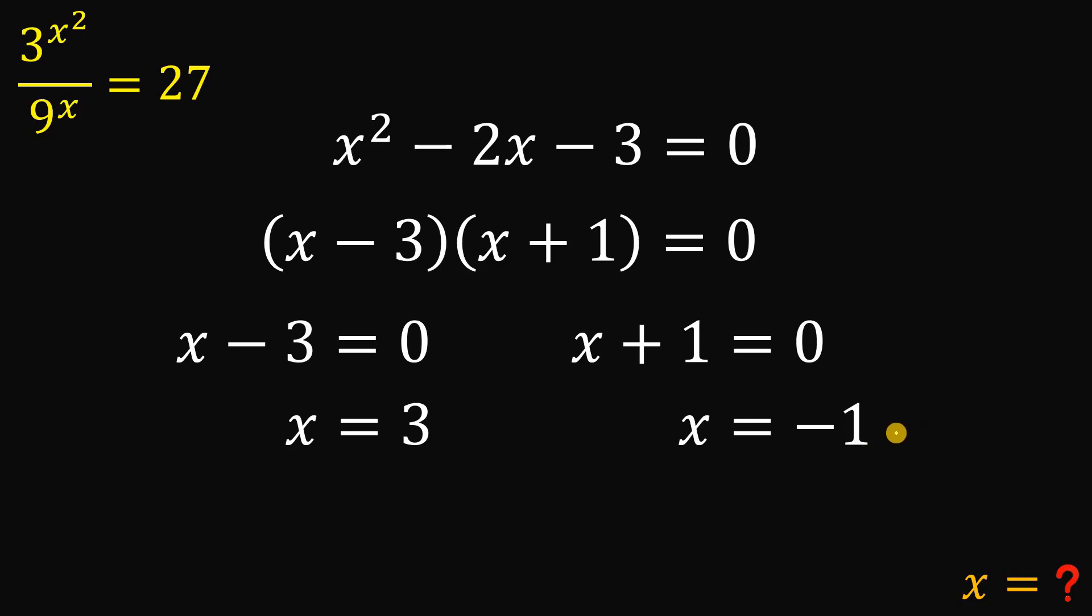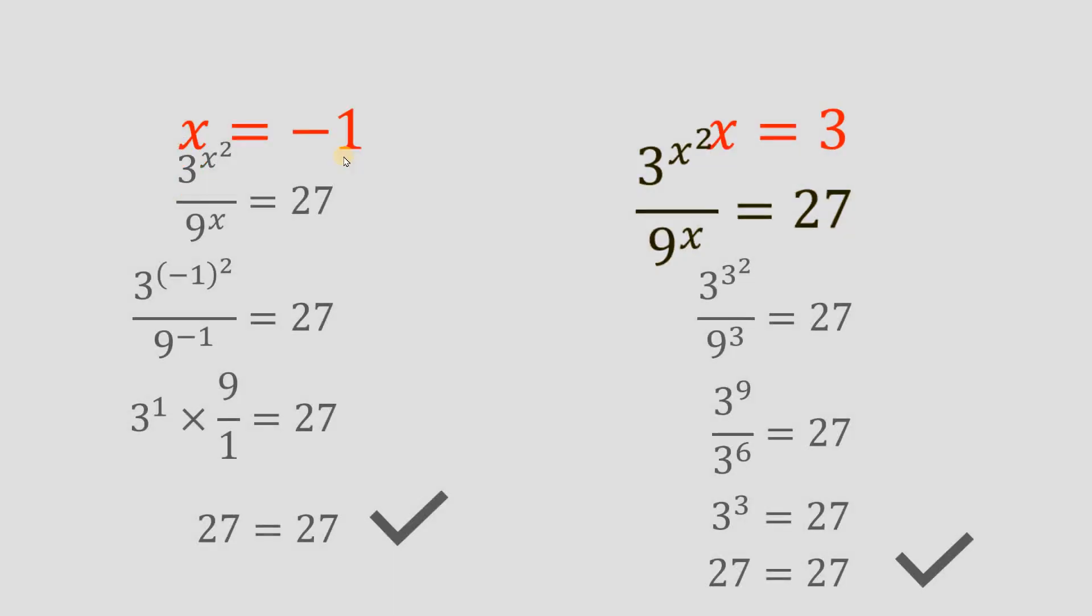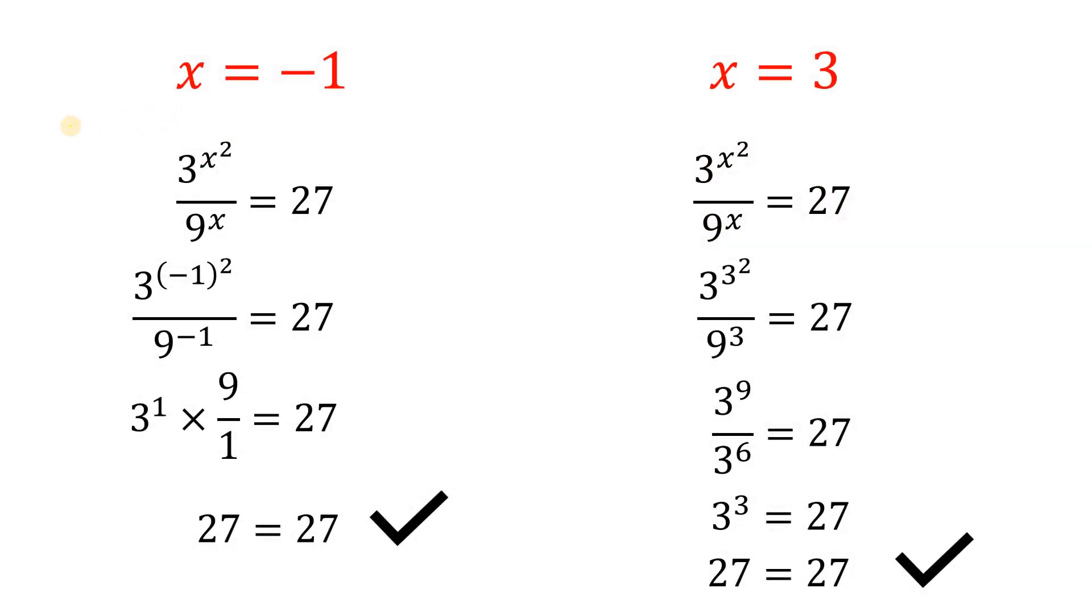Therefore, we found two different values of x that satisfies this equation. But, of course, let's do some checking. So, let's have x equals negative 1. When you replace all x with negative 1, you end up with 27 equals 27. So, negative 1 is technically a solution to this equation. And also, when you plug in x equals 3, you end up with 27 equals 27. So, x equals negative 1 is a solution and x equals 3 is also part of the solution.